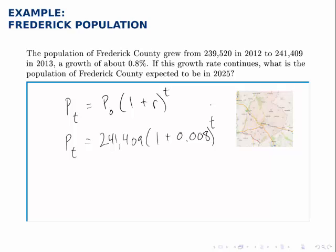To predict the population at any given point in time, all we have to do is figure out what value of t corresponds to the year in question. The year 2025 is 12 years after 2013, so 12 years after the year we've designated as our initial point. Therefore, I'll let t equal 12, and if we evaluate this expression on the right, we'll have the predicted population in the year 2025.